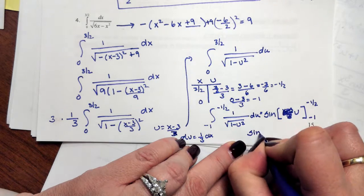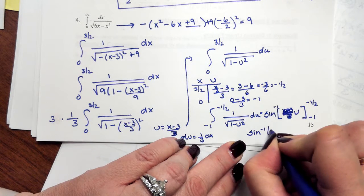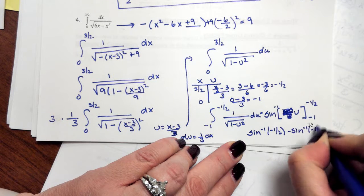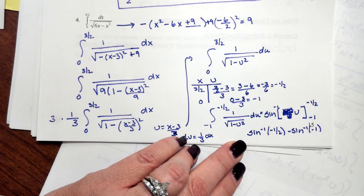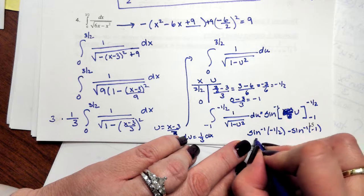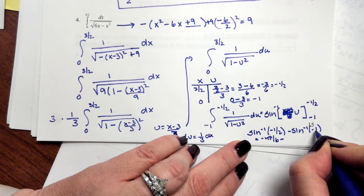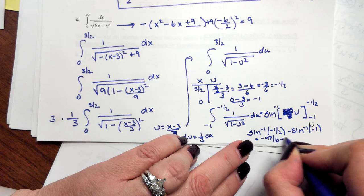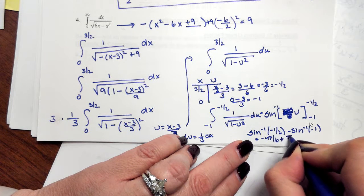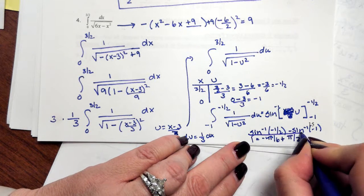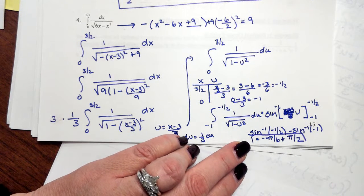So now I'm going to find my inverse sine of negative 1 half minus my inverse sine of negative 1. So my inverse sine of negative 1 half is negative pi over 6 minus inverse sine of negative 1 is going to be negative pi over 2. So negative negative becomes a positive. So negative pi over 6 plus pi over 2.